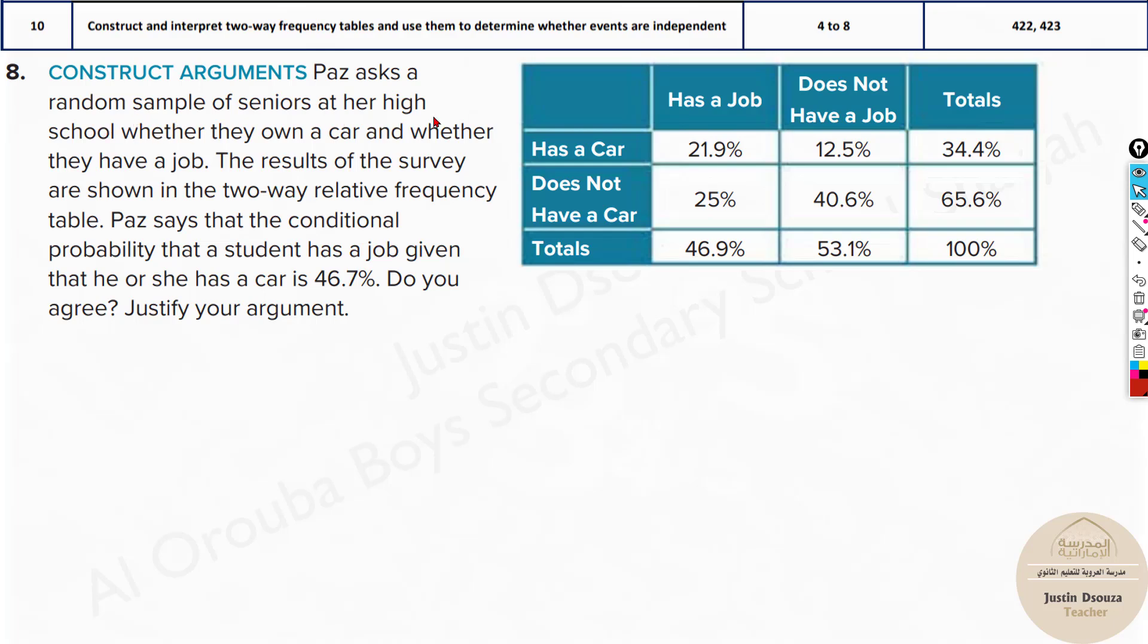Paz asks a random sample of seniors at a high school whether they own a car and whether they have a job. The results of the survey are shown in a two-way frequency table. Paz says that the conditional probability that a student has a job given that he or she has a car is 46.7%. Do you agree? So we need to just check this answer.